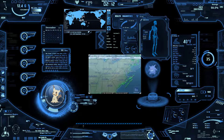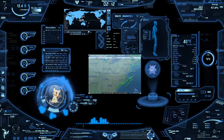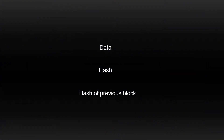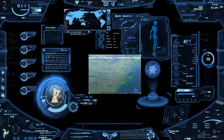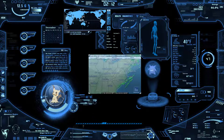To understand what a blockchain is, you need to know what a block is. A block is really just three things: data, a hash, and the hash of the previous block. As far as data goes, this depends on the blockchain we're dealing with, but with bitcoin you have the sender, the receiver, and the amount.